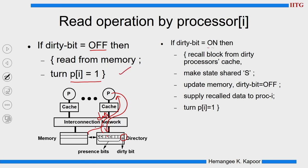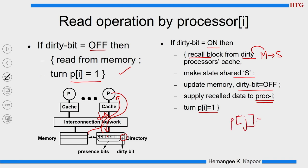If the dirty bit is on and you want to do a read, the data is not in memory — it is elsewhere with the dirty node. The directory goes to the dirty node, brings the data, and changes the state of the dirty node from M to S because that dirty node had the data in modified state. Then the dirty bit is turned off, the data is provided to the requesting processor, and p[i] is set to 1. If p[j] was the bit for the dirty node, it still has its bit set to 1 since this is a read request.